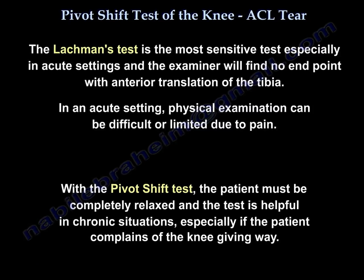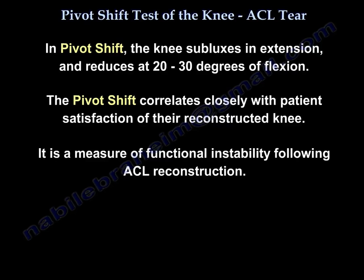Lachman's test is the most sensitive test, especially in acute settings, and the examiner will find no endpoint with anterior translation of the tibia. In an acute setting, physical examination can be difficult or limited due to pain. With the pivot shift test, the patient must be completely relaxed and the test is helpful in chronic situations, especially if the patient complains of the knee giving way. In pivot shift, the knee subluxes in extension and reduces at 20 to 30 degrees of flexion. The pivot shift correlates closely with patient satisfaction following the reconstructed knee and is a measure of functional instability following ACL reconstruction.